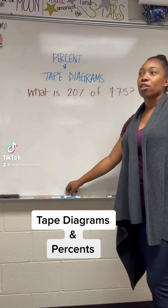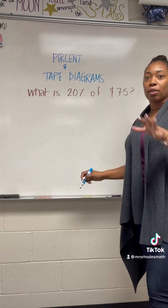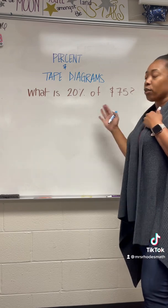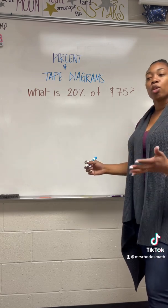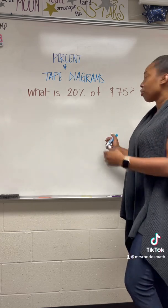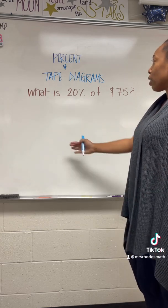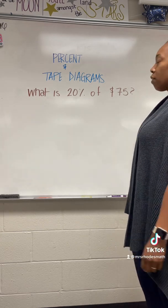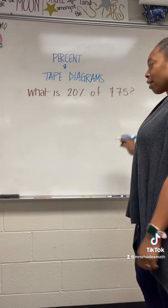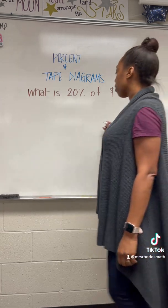I couldn't find a really cute easy video for my kids, so I'll make one. We use tape diagrams — it's kind of like doing a double number line. Long story short, I'll just show you. So first of all, what is 20% of $75? That's the problem we're going to try to solve, and I'll show you — first off, you're going to make a tape diagram.